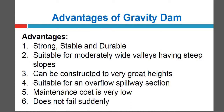A gravity dam is so proportioned in its size that it resists all external forces acting upon it by virtue of its own weight. It is theoretically triangular in shape and is to be constructed on solid, sound rock foundation. Even though its initial cost of construction is high compared to embankment dams, it requires very little maintenance. The most ancient gravity dams were constructed in Egypt using uncemented masonry. The gravity dam may be built in rubble masonry or concrete masonry — a close example is Khadakwasla Dam across the Mutha River in Pune district.